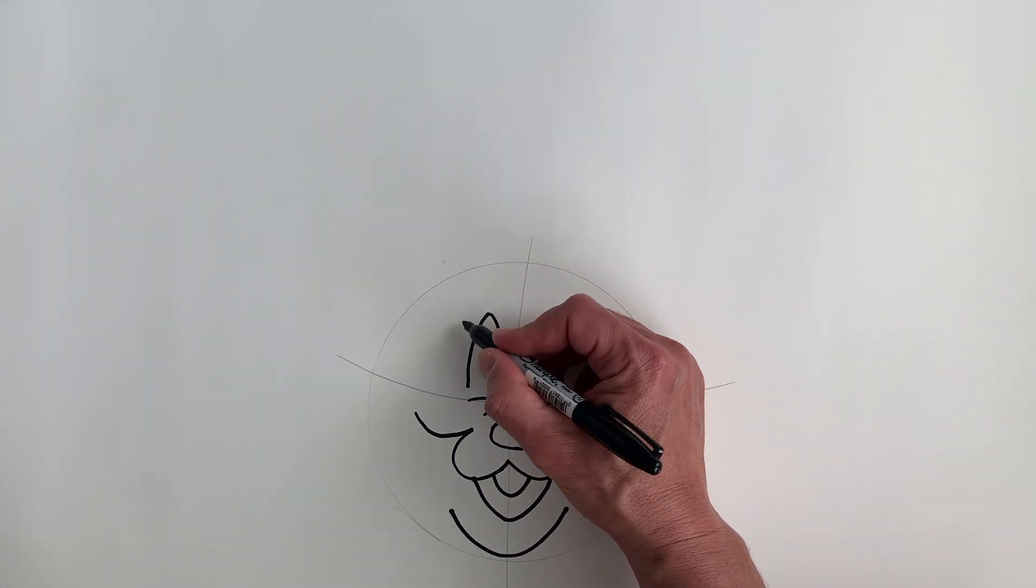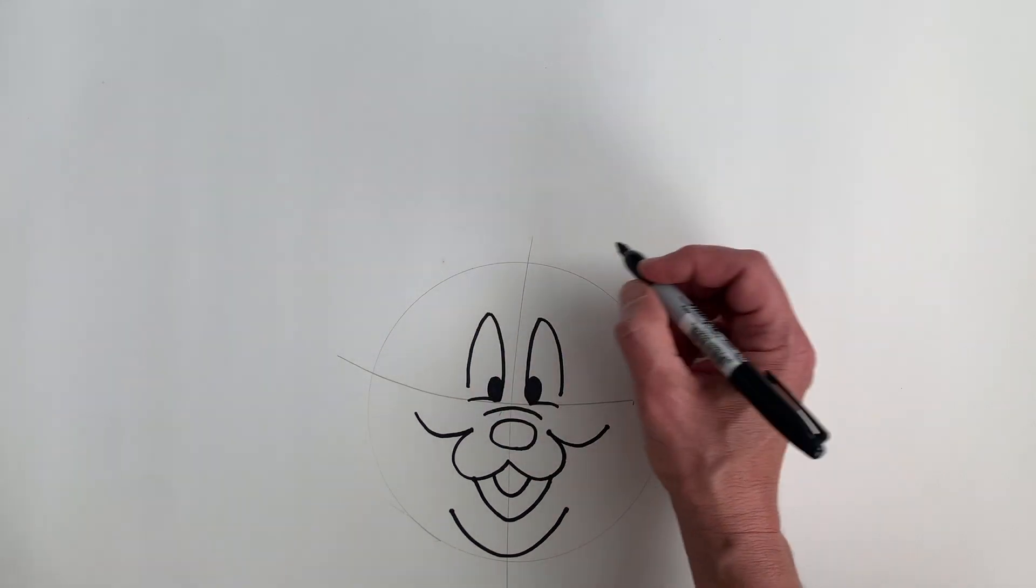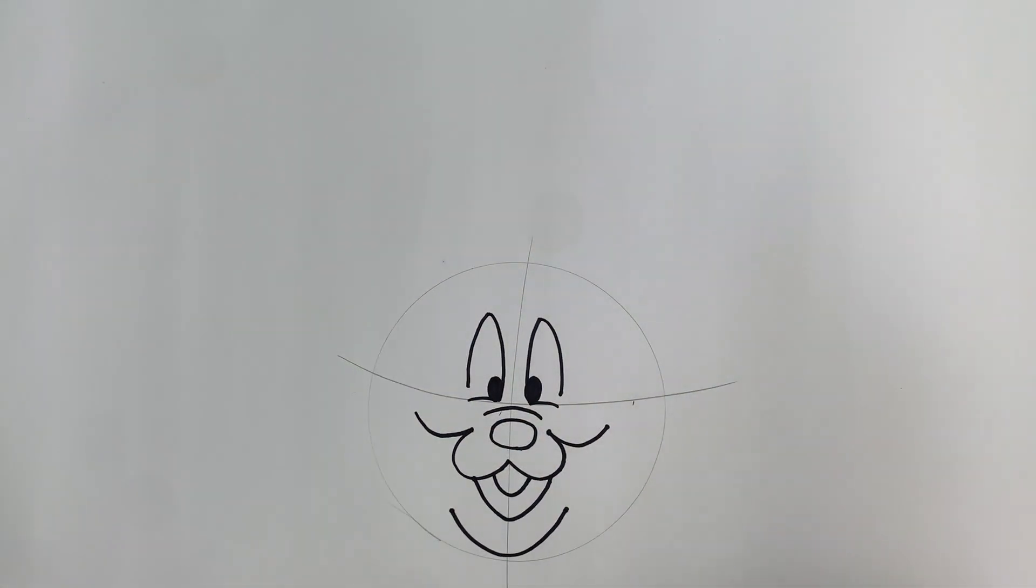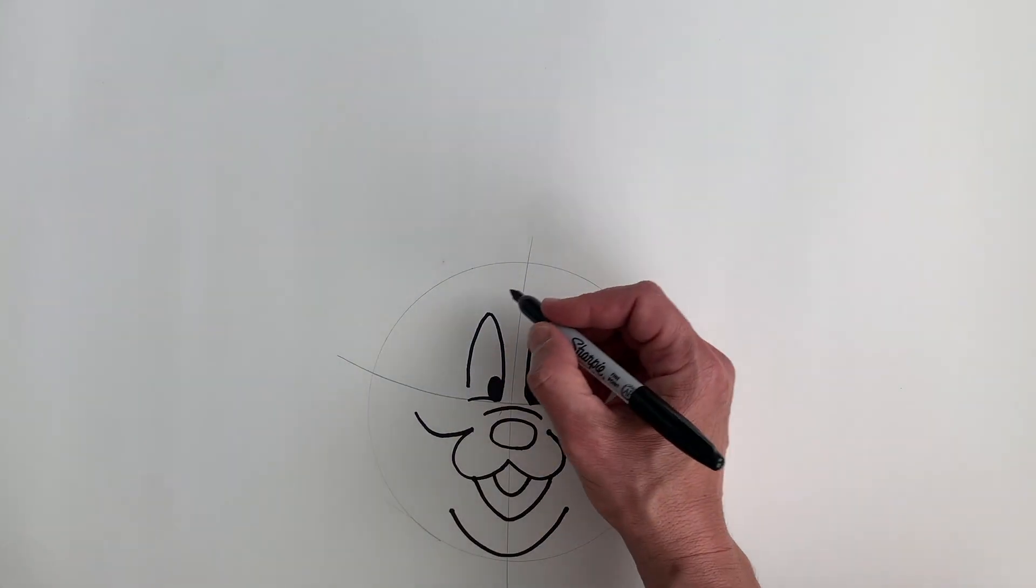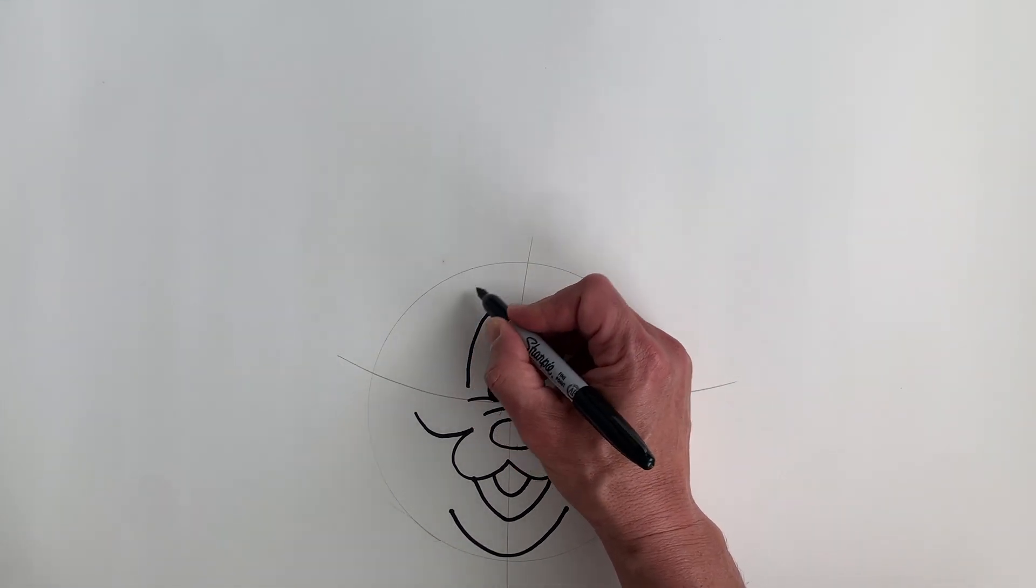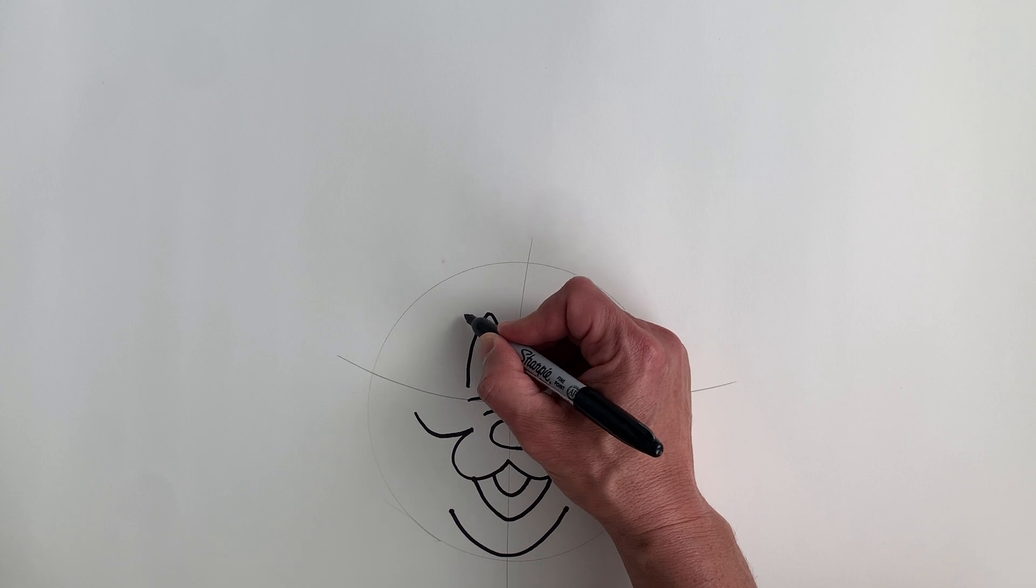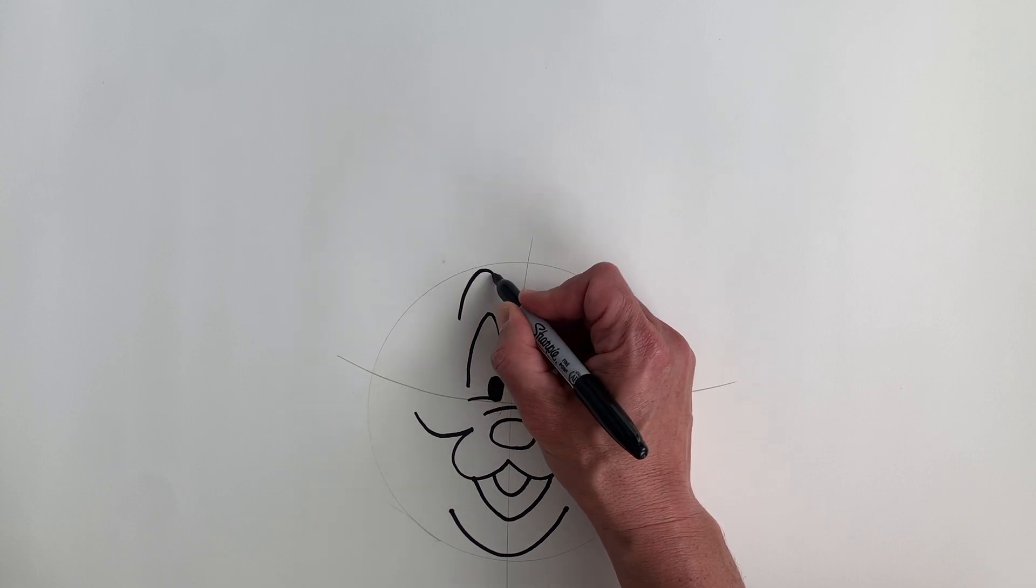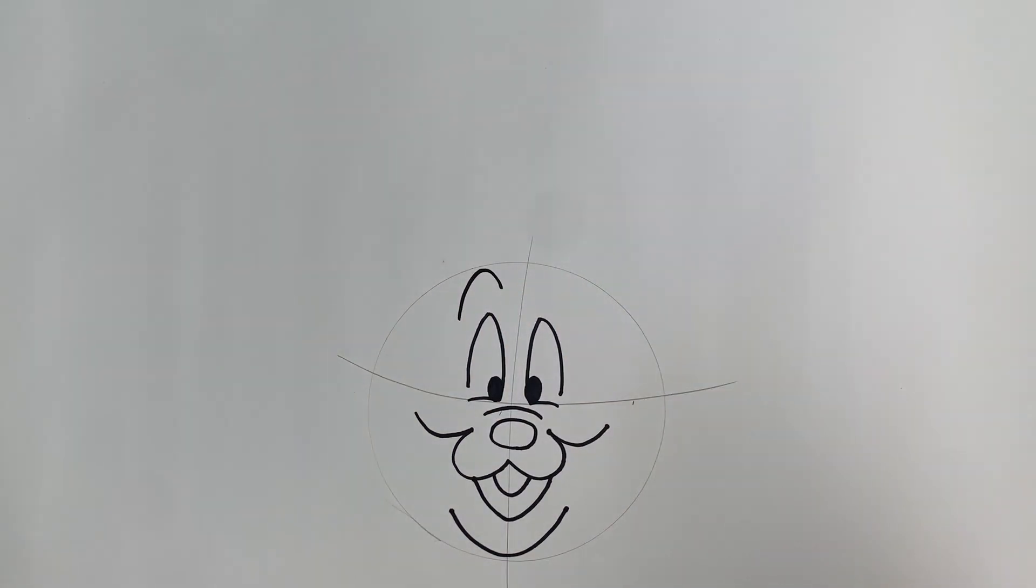His eyes need a little more character. So as you learned from the other videos, he needs, that's right, eyebrows. And the eyebrows are just a series of simple lines and shapes. Right around here, I want you to make kind of an arch just like that.